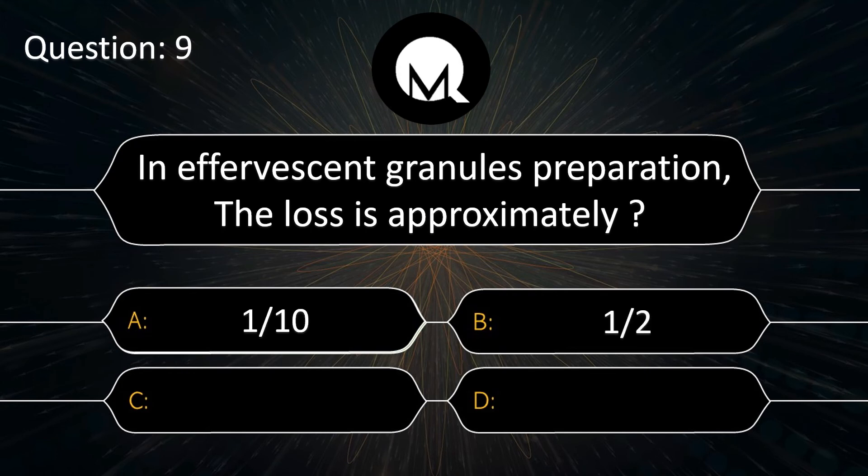In effervescent granule preparation the loss is approximately: 1/10, 1/2, 1/4, or 1/7? Answer is 1/10.